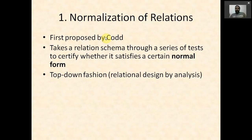In relational database design, we usually follow a top-down design methodology. We start from entity relationship diagrams, map them into relations, and obtain tables. We then check each table for certain conditions. If it satisfies those conditions, we say the tables are in a particular normal form.